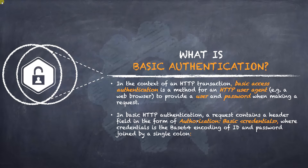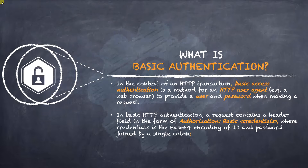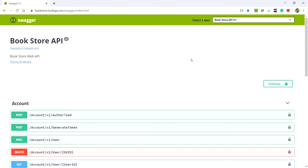In basic HTTP authentication, the request sent to the server should contain a header with a key-value pair where the key is 'Authorization' and the value is the phrase 'Basic' followed by the credentials, which are base64 encoded. Having learned basic authentication, it's time to try the same in the Swagger and Postman tools.